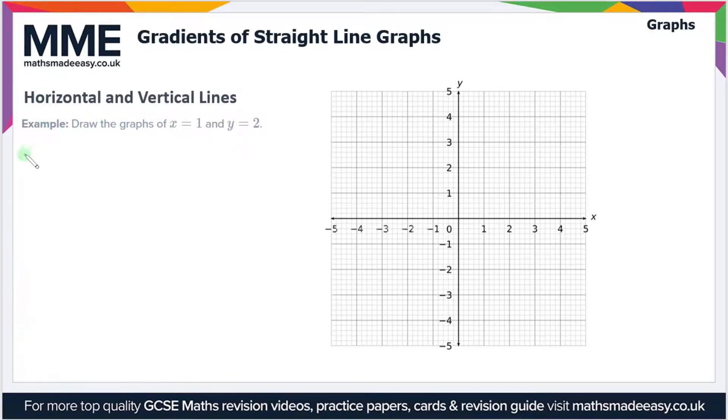Horizontal lines are given in the form y equals a. That means there's a constant y value - in other words, for all values of x, the y value is the same. For vertical lines, the opposite is the case. Those are in the form x equals a, so that means for all y values, x is the same.